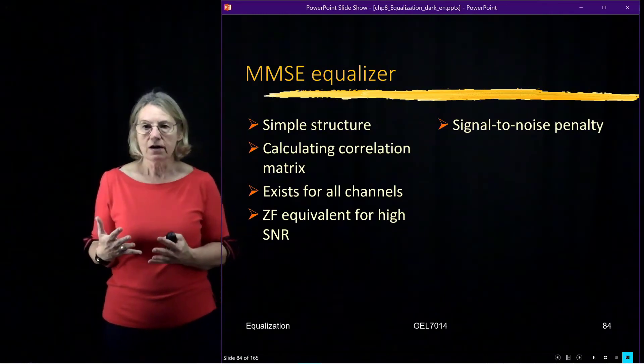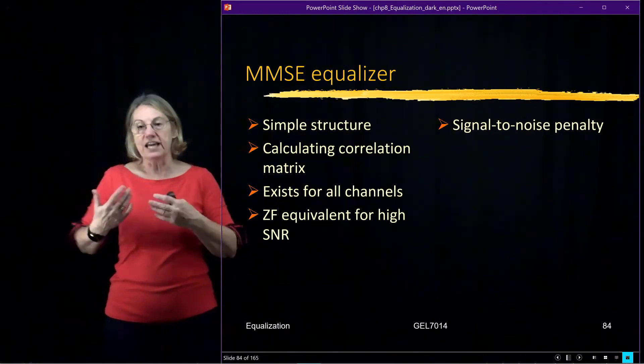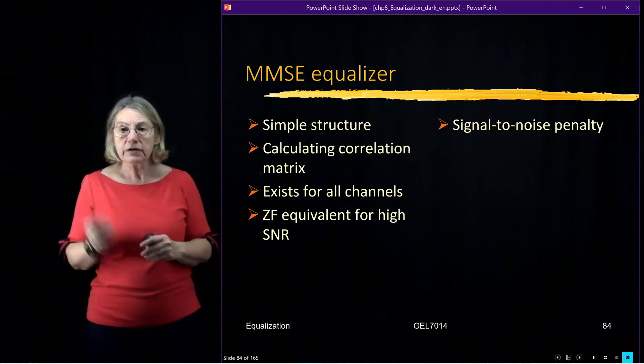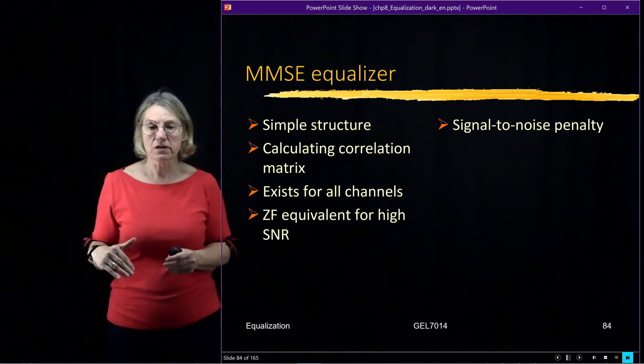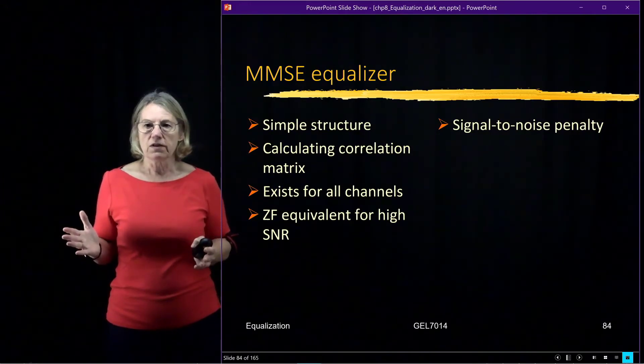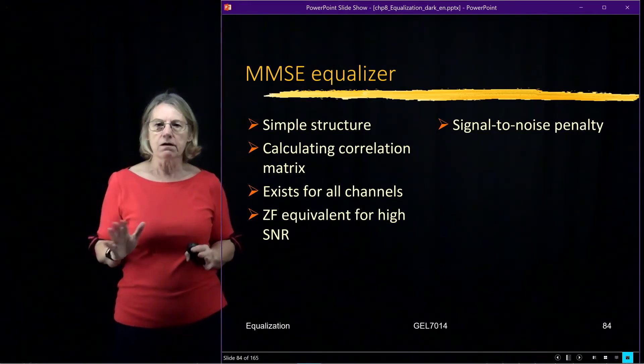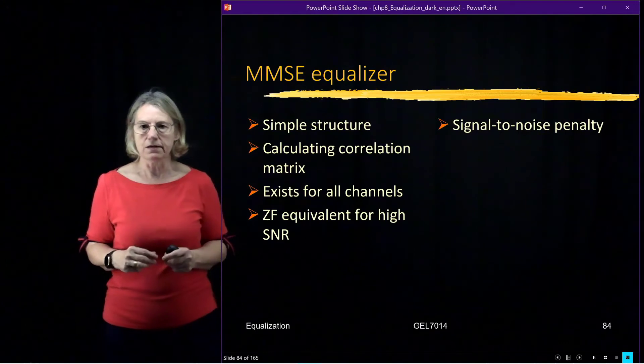In the zero forcing, when we essentially are looking for the inverse of the channel frequency response, a channel frequency response with deep nulls, it didn't exist. Well, that formulation doesn't happen here, it always exists, the MMSE filter.